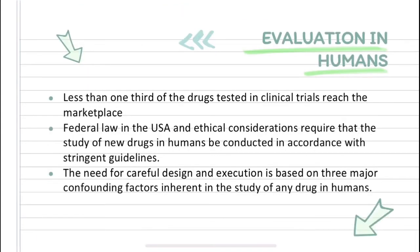After preclinical testing, there will be evaluation in humans. Less than one-third of the drugs tested in clinical trials reach the marketplace. Federal law in the USA and ethical considerations require that the study of new drugs in humans be conducted in accordance with stringent guidelines. The need for careful design and execution is based on three major confounding factors inherent in the study of drugs in humans.